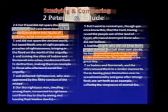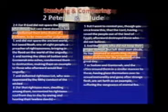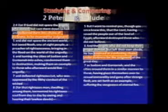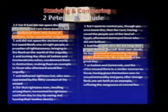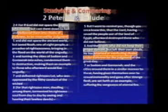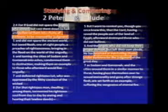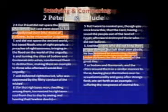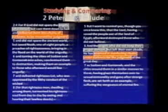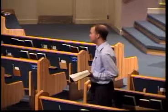Peter points out another illustration — his second: God did not spare the ancient world, but He saved Noah, one of eight people, a preacher of righteousness, bringing in the flood on the world of the ungodly. Here's another illustration — 1,656 years after creation, these people turned against God. Genesis chapter 6 says every intent of their heart was only evil continually, except for one man and his family. Noah was not only a preacher of righteousness in what he proclaimed, but in the way that he lived. Noah found grace in the eyes of the Lord.